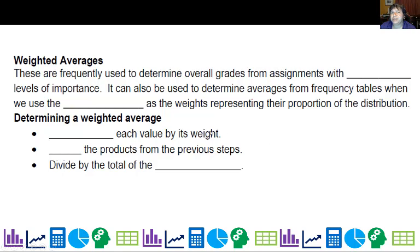I wanted to take a look at weighted averages, because that's going to come into play in our frequency table work. These are frequently used to determine overall grades with different weights on tests, quizzes, and daily work. It can also be used to determine averages for frequency tables when we use the frequencies as the weights representing their proportion of the distribution. To determine a weighted average, multiply each value by its weight, sum the products from the previous steps, and divide by the total of the weights.